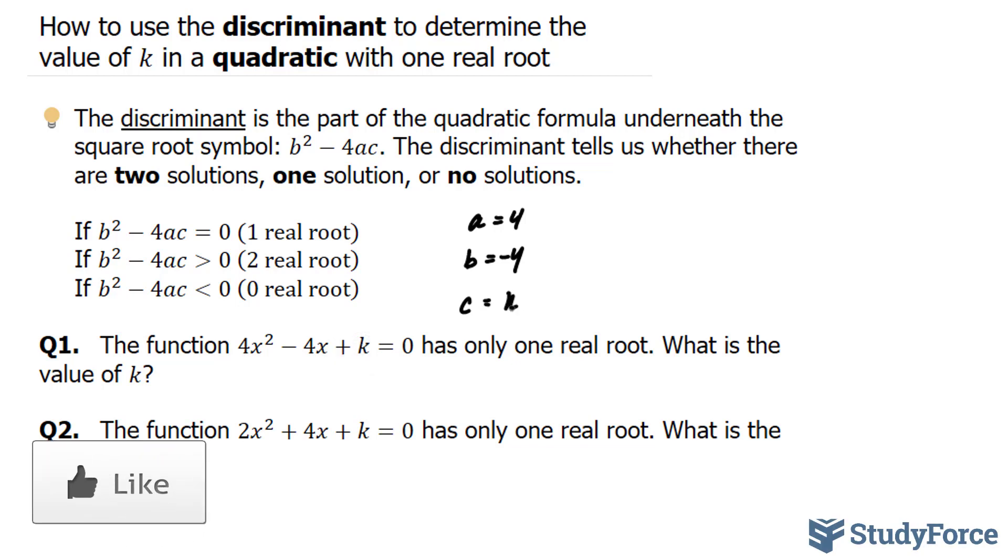Next, I'll substitute these values into my discriminant, where I end up with (-4)² minus 4 times our a, which is 4, times k. And this has to equal zero in order for this to be true.